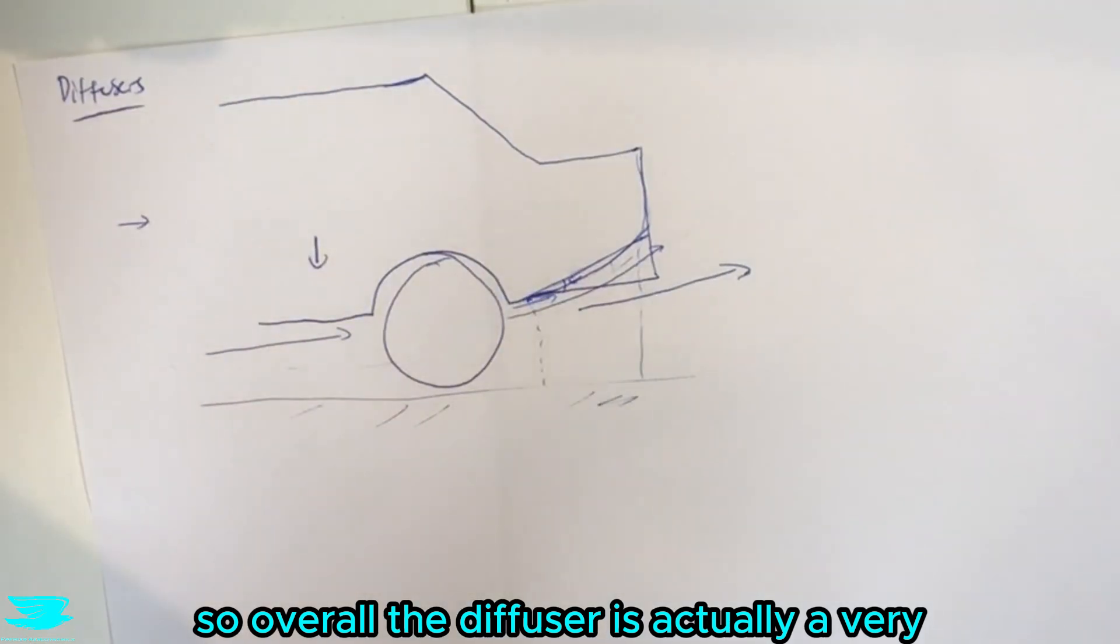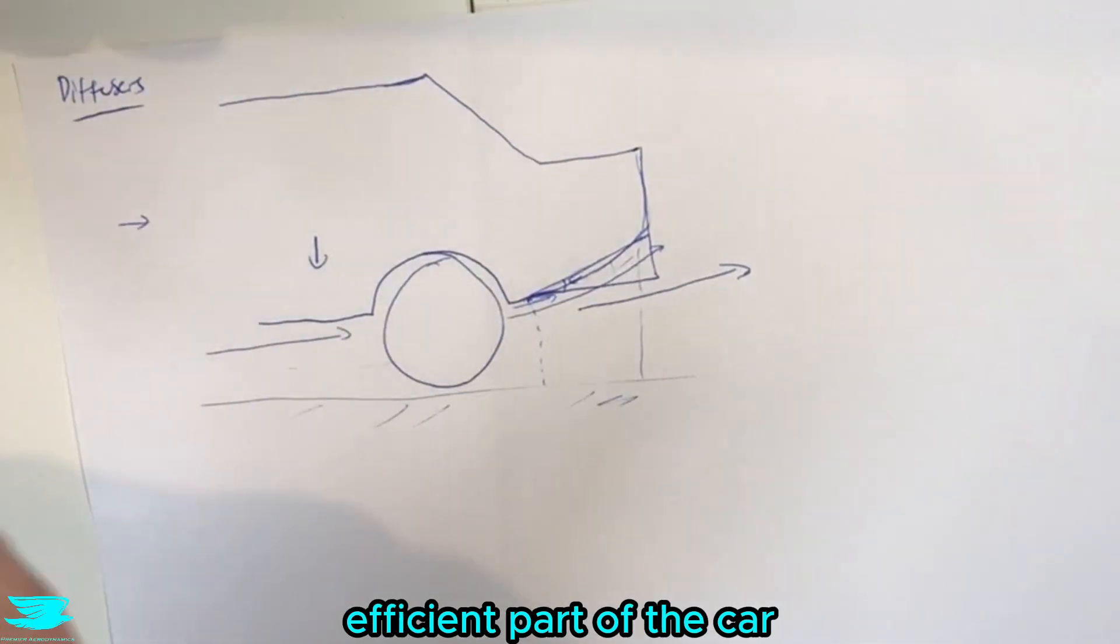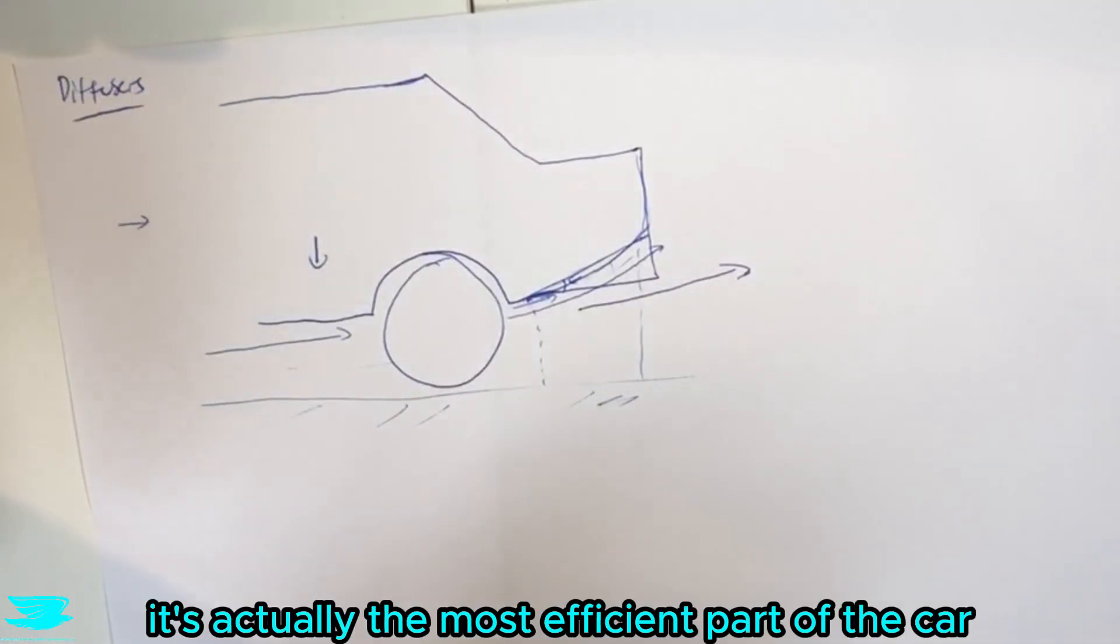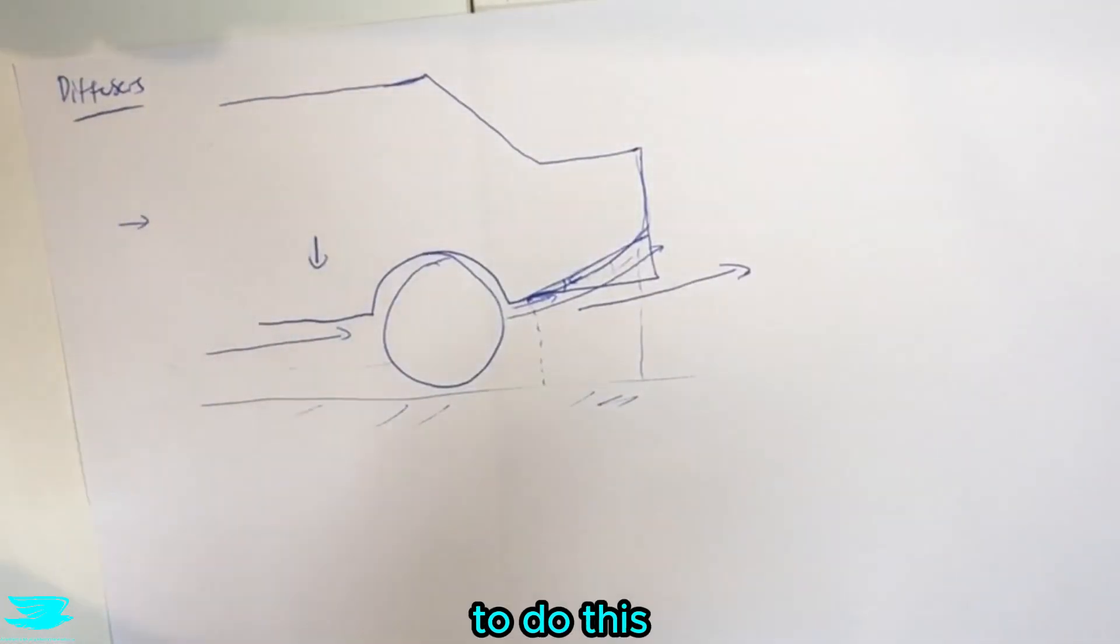So overall the diffuser is actually a very efficient part of the car for producing downforce with not much of a drag penalty. In fact arguably it's actually the most efficient part of the car to do this.